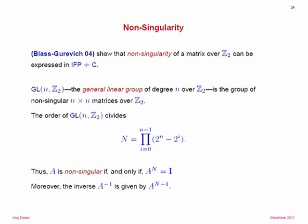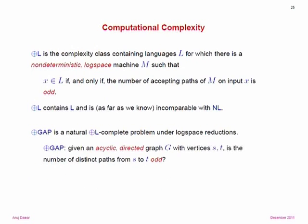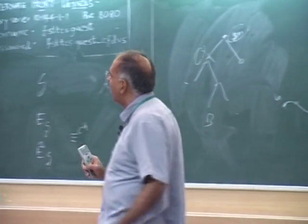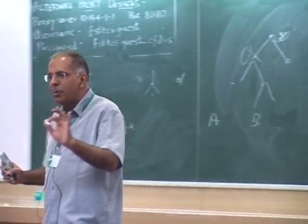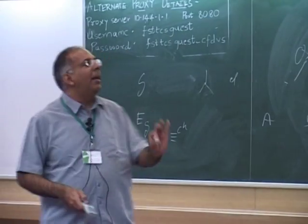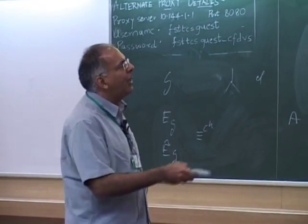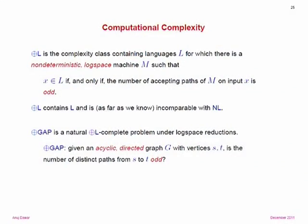It seems there's quite a lot you can do. To place it into context — and this answers your question, Kamal — the problems we're looking at are not P-complete. In terms of computational complexity, the natural place is a complexity class called parity L. Parity L is defined as the complexity class containing languages for which there's a non-deterministic logarithmic space machine with the acceptance condition that a string is in the language if and only if the number of accepting paths is odd.